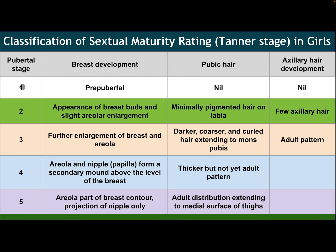Tanner stages in females: Stage 1 — breast prepubertal, no pubic hair, no axillary hair. Stage 2 — breast bud development with slight areolar enlargement; minimally pigmented hair on labia; few axillary hairs. Stage 3 — further enlargement of breast and areola; pubic hair darker, coarser, and curled extending to mons pubis; adult axillary hair pattern. Stage 4 — areola and nipple form a secondary mound above the level of the breast; pubic hair thicker but not yet adult pattern. Stage 5 — areola part of breast contour with projection of nipple only; pubic hair adult distribution extending to medial surface of the thigh.